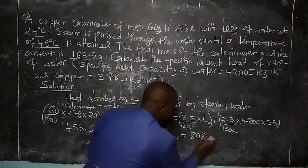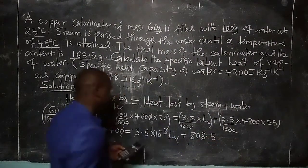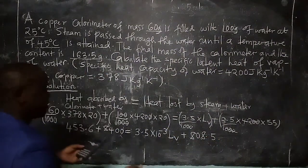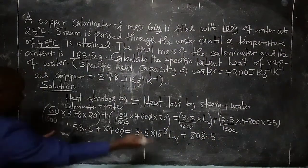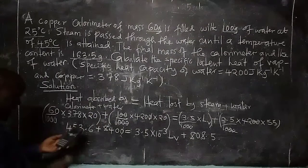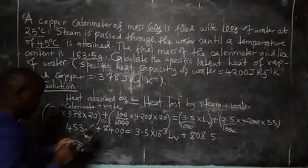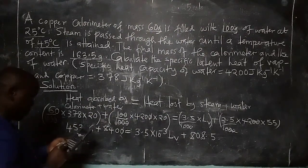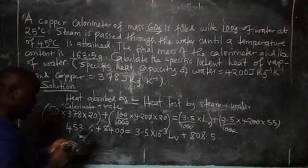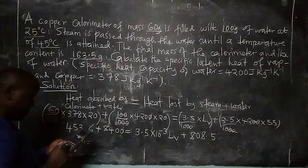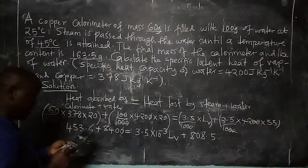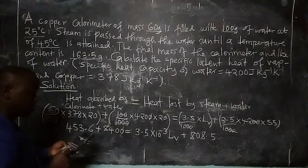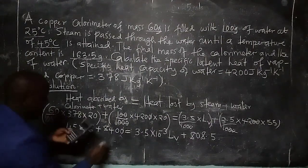This gives 808.5. Grouping like terms together, we move 808.5 to the left side and have 453.6 plus 8400 minus 808.5, giving us 8045.1 on the left side, which equals 3.5 times 10 to the power negative 3 times L.